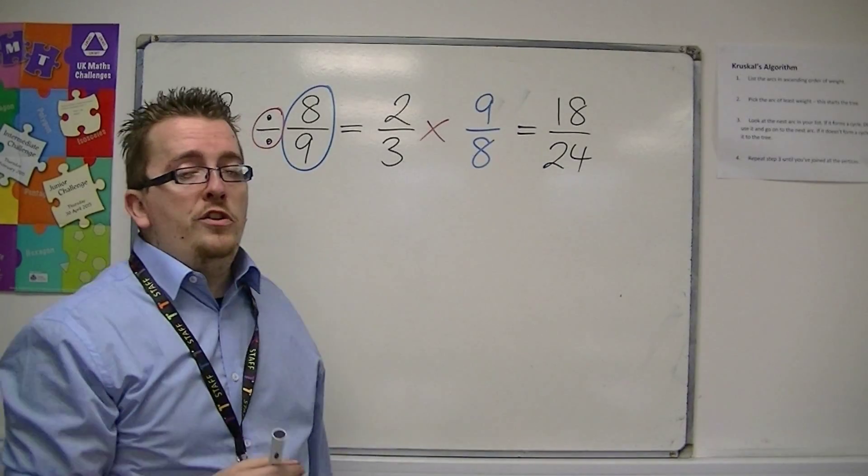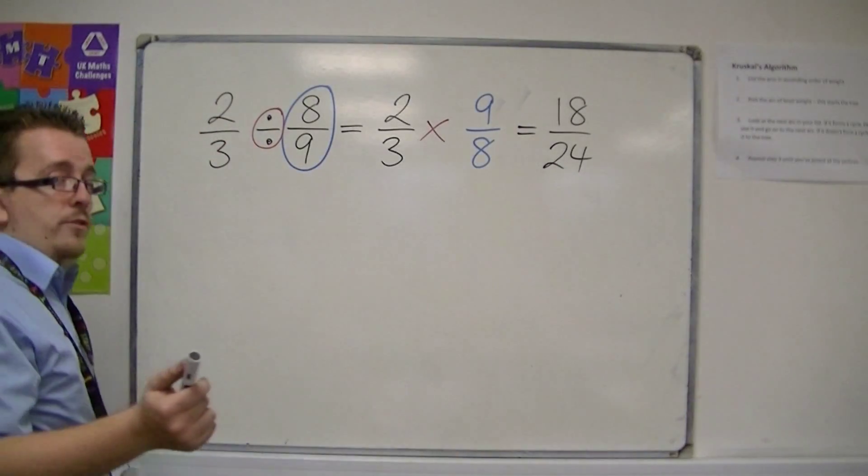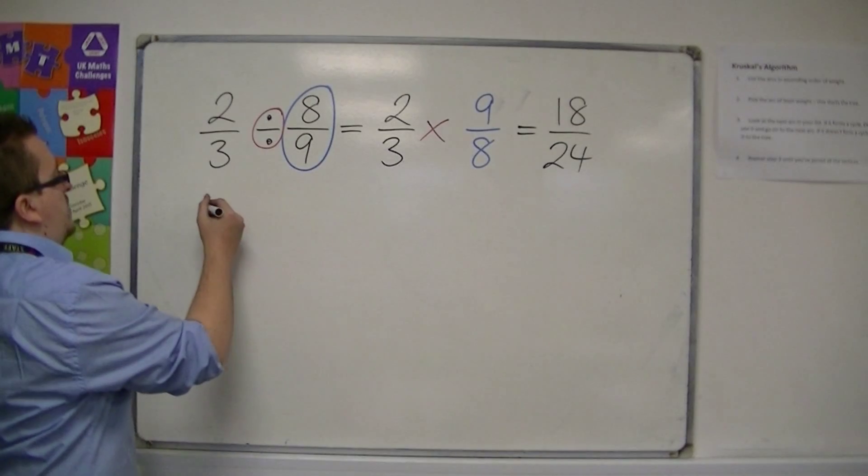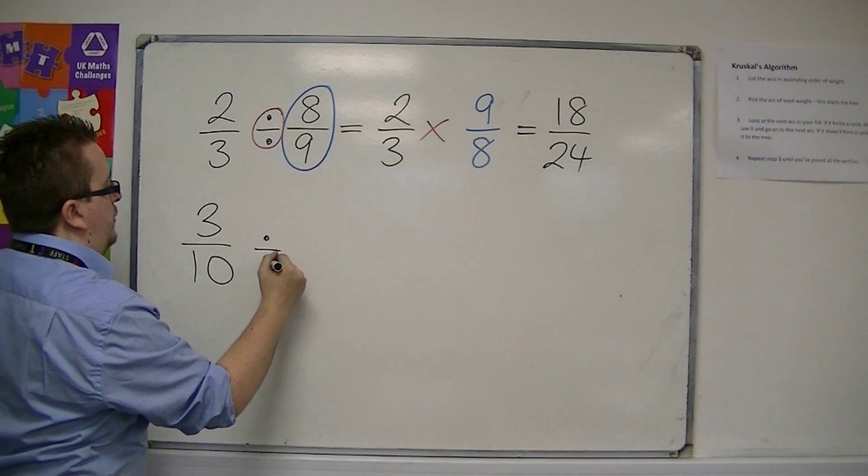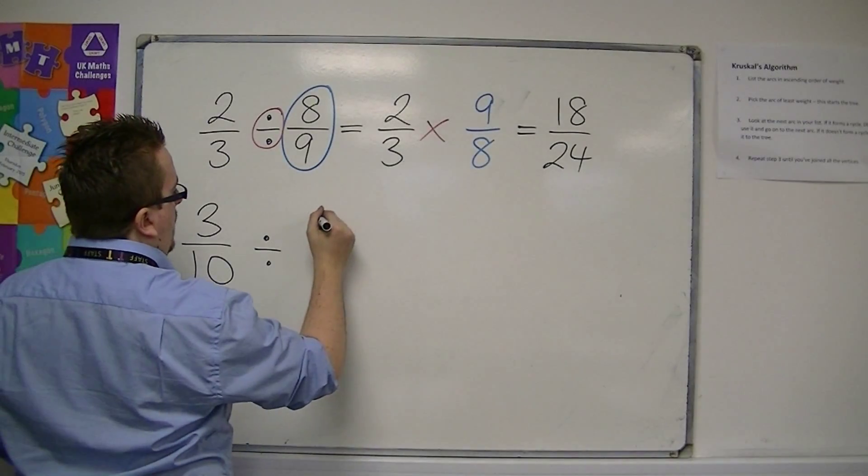And that's how you do division. So, let's go through another example. Let's do something like 3/10 divided by 1/9.